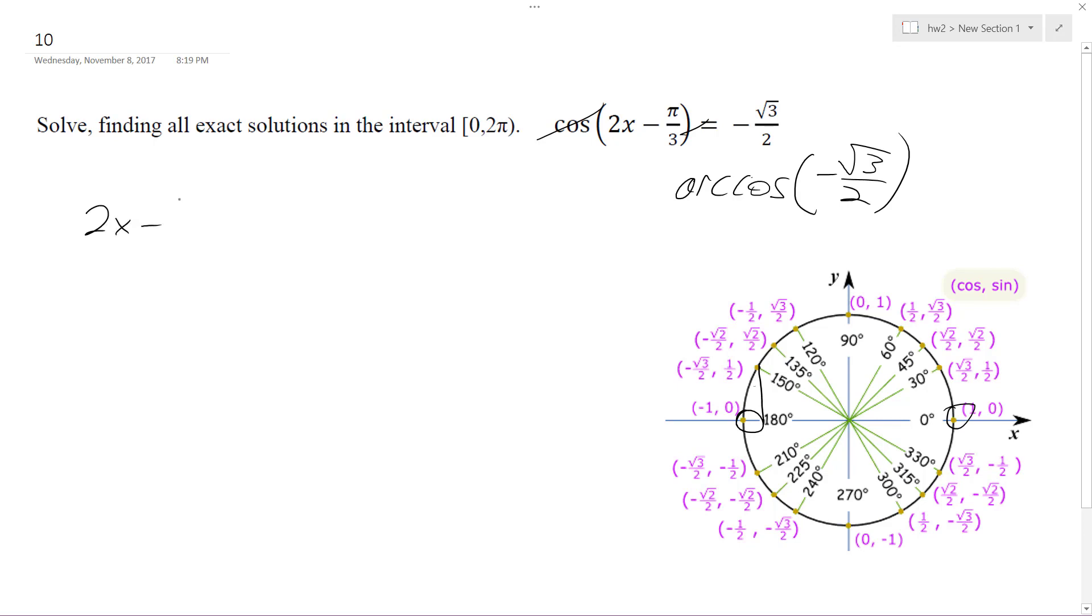So 2x minus π over 3 equals 5π over 6. So add π over 3 to both sides. Common denominators, I get 2x is equal to 5π over 6 plus 2π over 6 gives us 7π over 6.